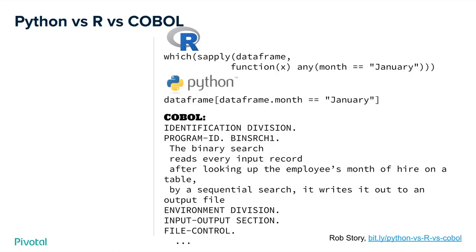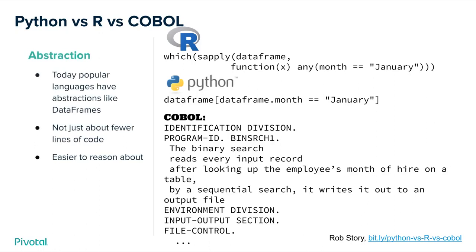COBOL is a very complicated language to do very basic operations in, as you can see from this little snippet of the same logic trying to select for certain rows. My point, tongue-in-cheek, is that both Python and R are very good for a lot of the operations needed in data science. They both have abstractions called data frames, which I'll dig into more. It's not just about fewer lines of code — it's also easier to reason about at the level important for data science.